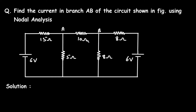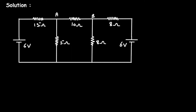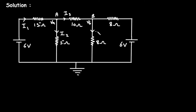Here, for the circuit, we have to find the value of this current — the current through this branch with the 10-ohm resistor — using nodal analysis. We can see there are two nodes. Let's say this is the reference node with zero voltage. This node voltage is Va and this node voltage is Vb. We will assume all currents flowing towards the reference node: current i1, i2, i3, i4, and i5.